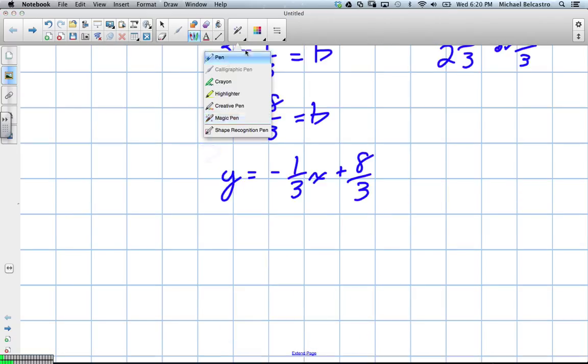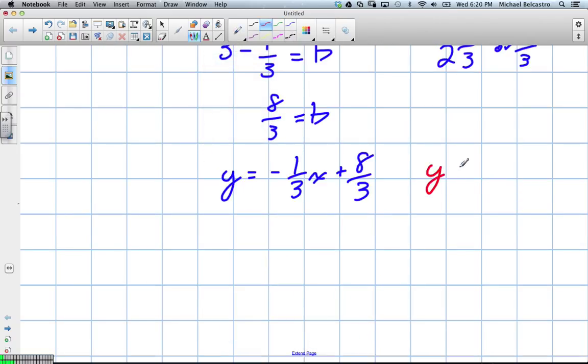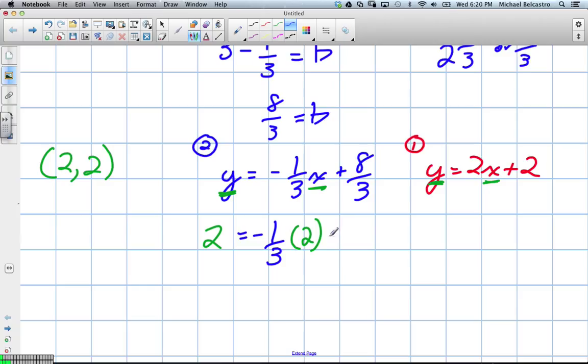We'll write them beside each other so it's easy to see, and just make sure that they work. Substitution or elimination will become a little more difficult with fractions. So let's write the other equation, which was y equals 2x minus 2. Correct? So that was equation 1 in red, and this is equation 2. We said our point of intersection was 2 and 2, so we're going to test this.